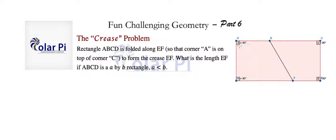Here we've got rectangle ABCD, which is folded so that corner A is on top of corner C. We then form a crease EF in this folding. The question is, how long is crease EF?